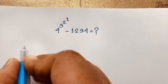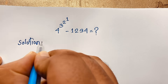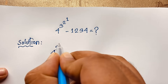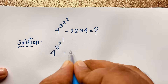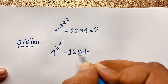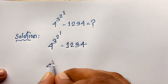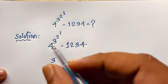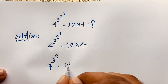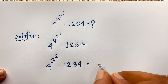So I solve this question with a method or math solution. Our question here is 4 to the power 3, power 2, power 1, minus 1234. Now at this moment you can see here: 4 to the power 3, 3 to the power 2, but 2 to the power 1 — it will be 2. And here minus 1234.